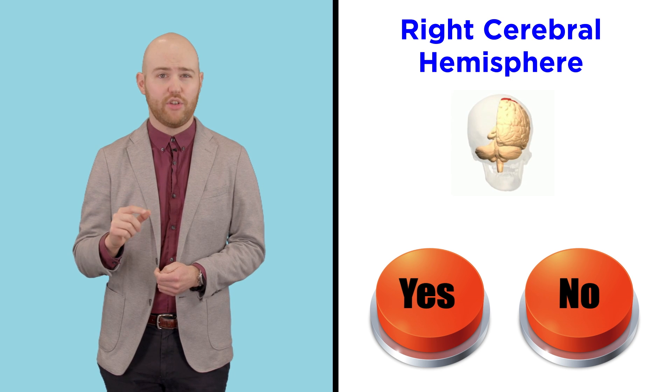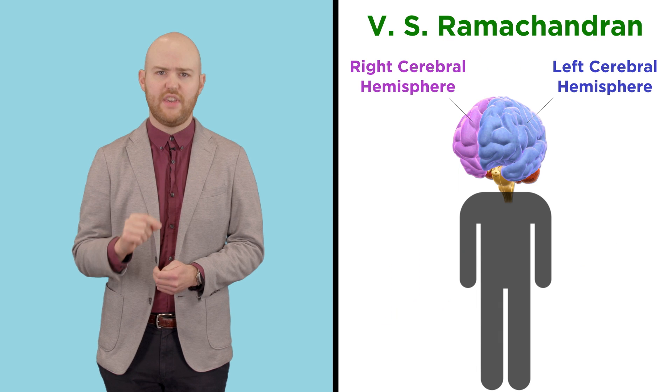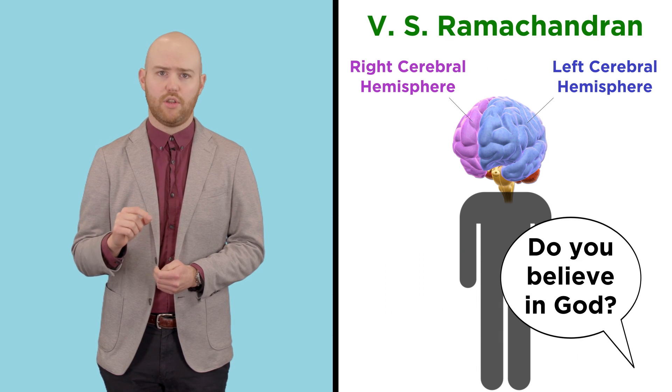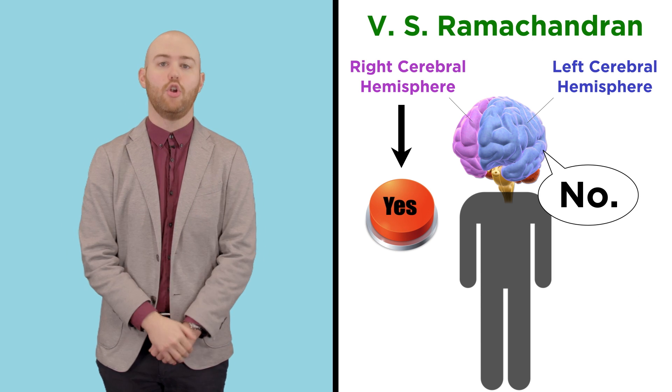The right hemisphere cannot speak, but it can point to words like yes or no to answer a question. Neurologist V.S. Ramachandran tells the story of a split-brained patient who was asked whether he believes in God. The right hemisphere pointed to yes, while the left hemisphere declared no.